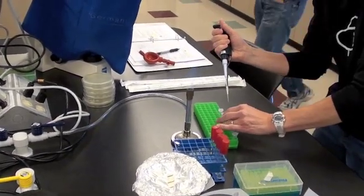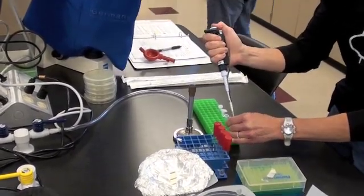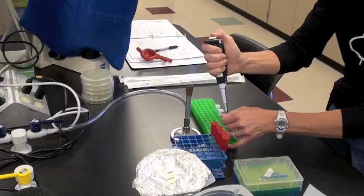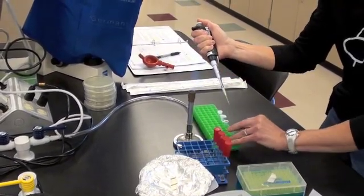She'll be taking 10 microliters from her 10 to the minus 1 solution and transferring it to another 90 microliters of phage buffer. This will become her 10 to the minus 2 dilution.